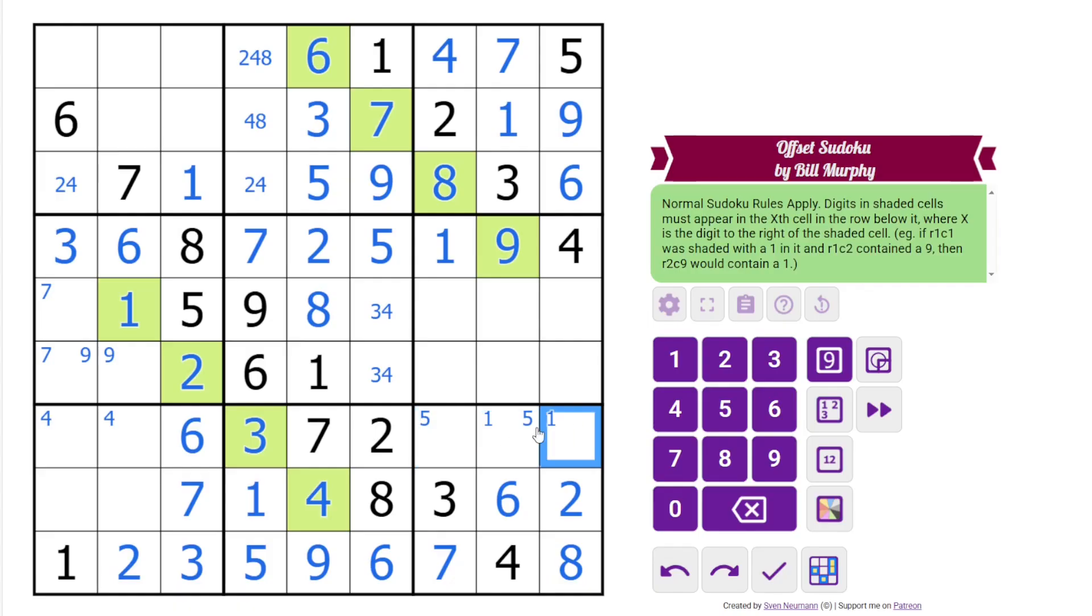And now this is 1, 5, 9 in that order, these digits. This is a 3, 7 pair. This is a 2, 8 pair. This is 6, 5.